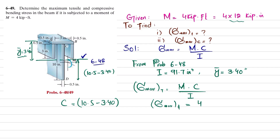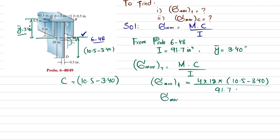So the maximum tensile stress equals the moment, which is 4 kip-ft converted to 4 × 12 = 48 kip-in, multiplied by c = (10.5 − 3.40), divided by I = 91.7 in⁴. Solving this gives a maximum tensile bending stress of 3715.12 psi, or approximately 3.72 ksi.